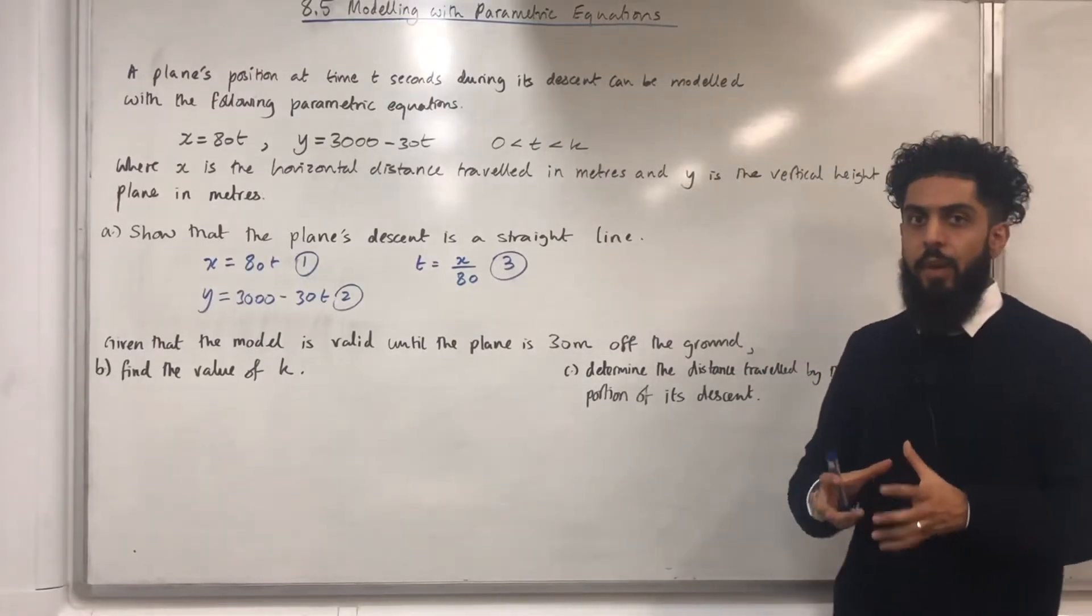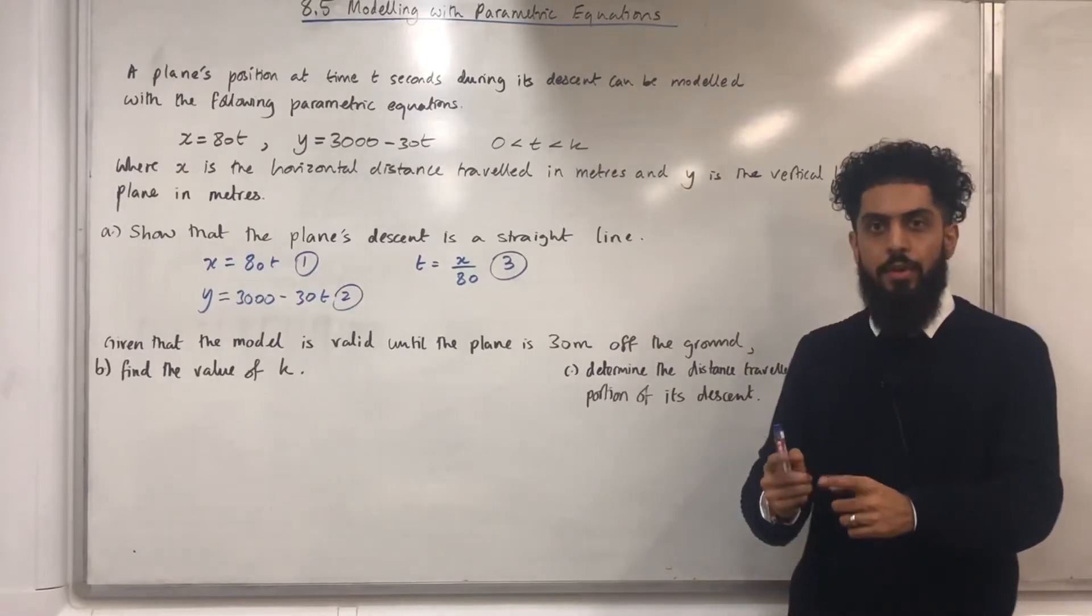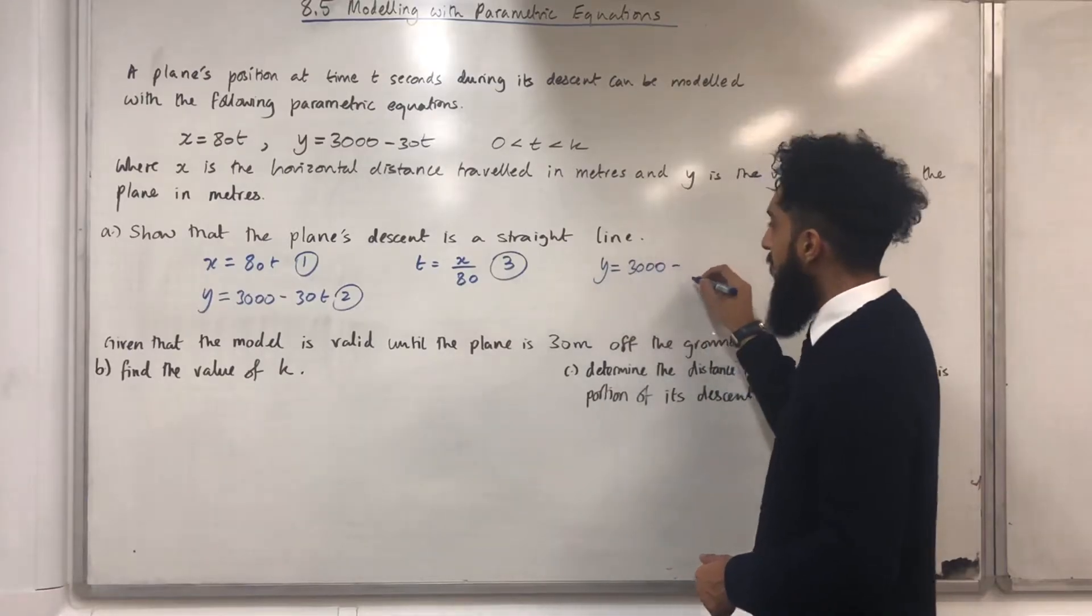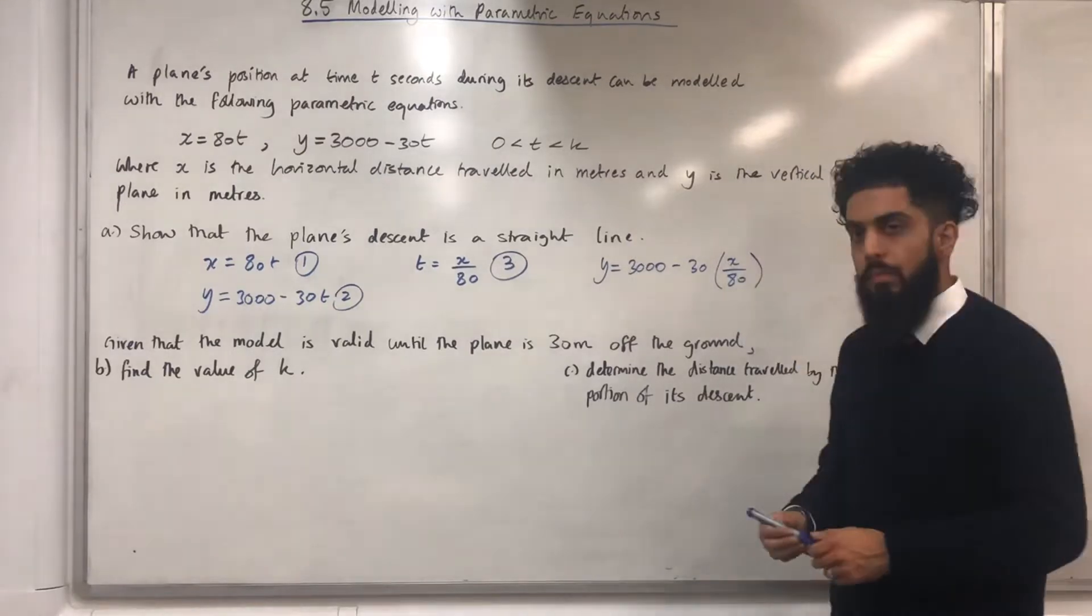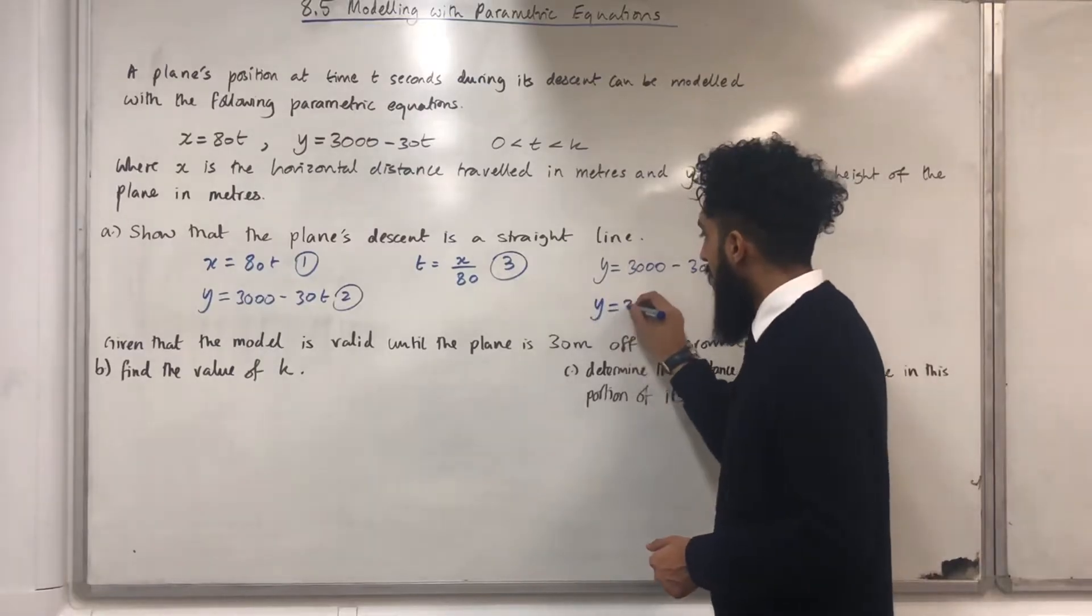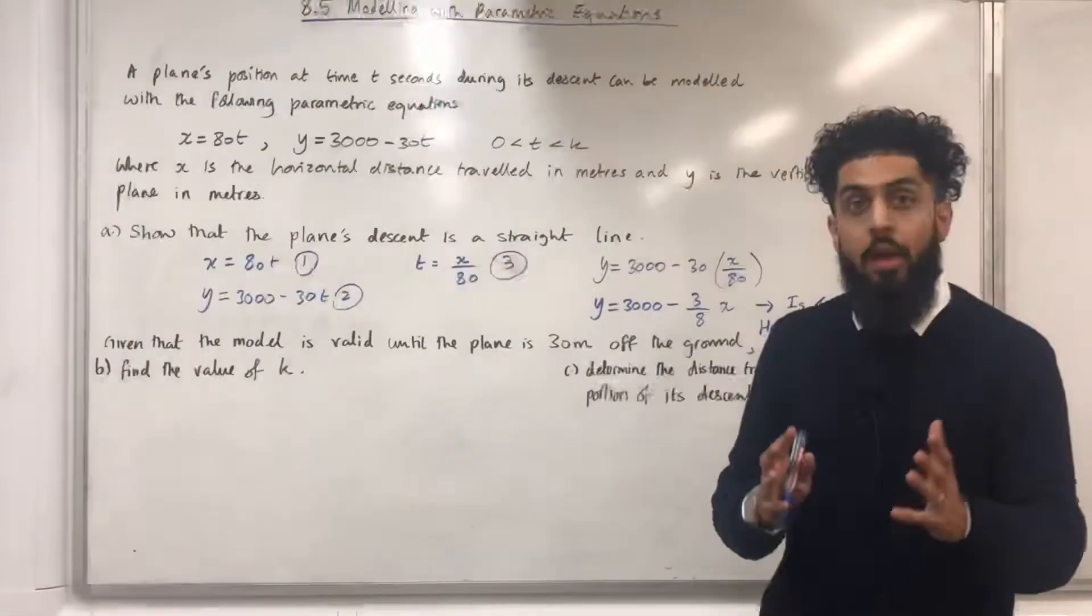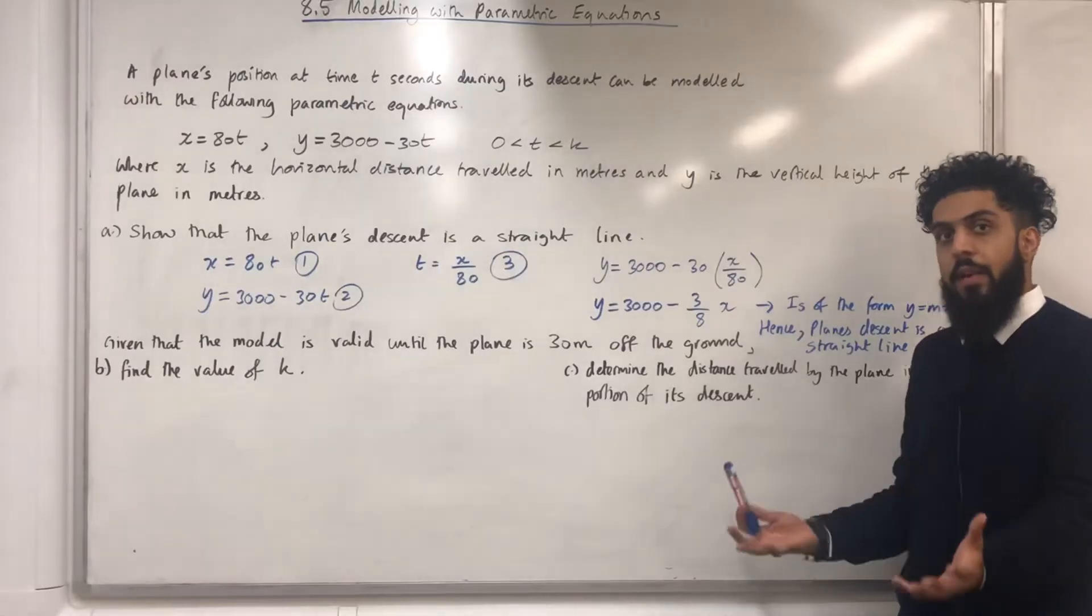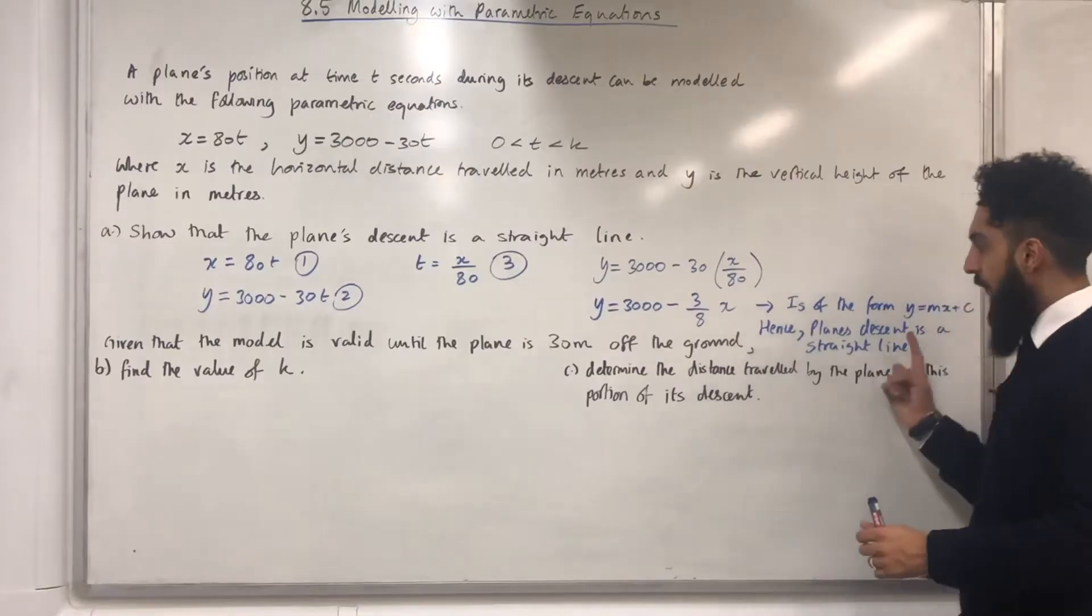Now, to find the Cartesian equation, all I need to do is substitute equation 3 into equation 2. If I do that, I obtain y equals 3000 minus 30 in bracket x over 80. If I simplify this, my answer will be y equals 3000 minus 3 over 8x. The equation y equals 3000 minus 3 over 8x is of the form y equals mx plus c, hence the plane's descent is a straight line. Don't forget to write your conclusion.